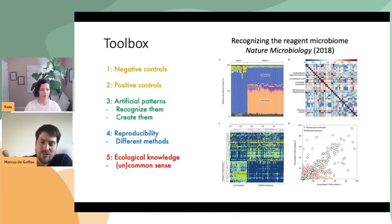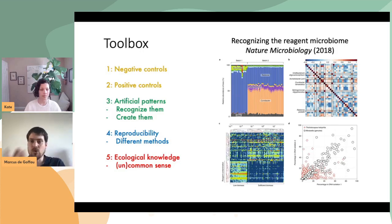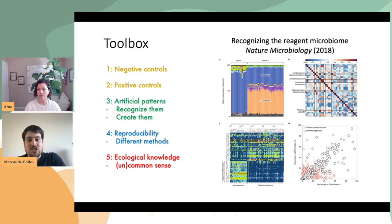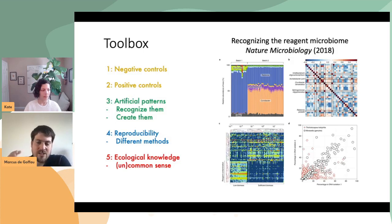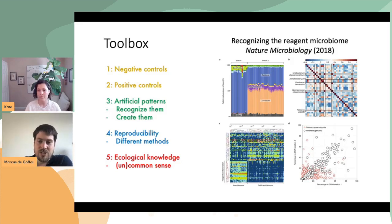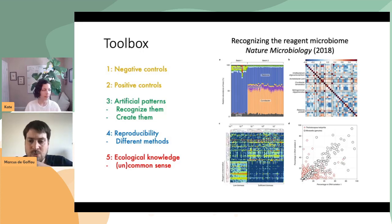Another pattern is that reagent contaminants are often very highly correlated with each other because they come from the same source. So if you identify one reagent contaminant, you can use that to fish out others. You can also use methods like hierarchical clustering: low biomass samples tend to cluster together with one another and with negative controls, associated with a lower number of microbial signals — those signals in the lower right corner being reagent contaminants — while samples with a high amount of biomass tend to have their own unique genuine profile.